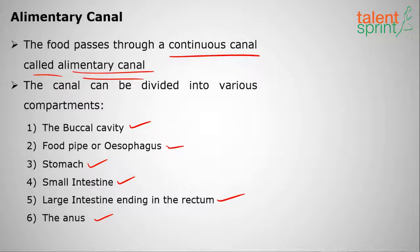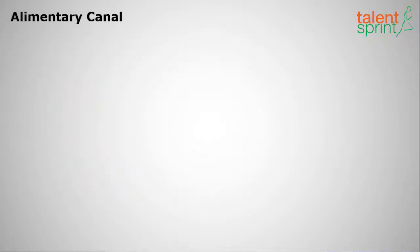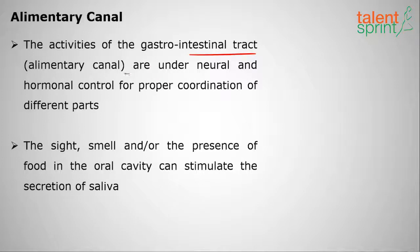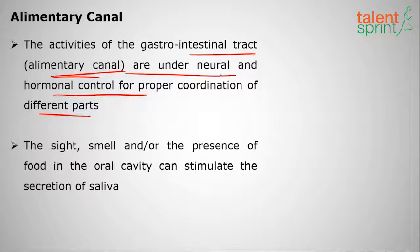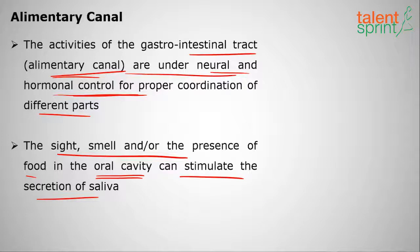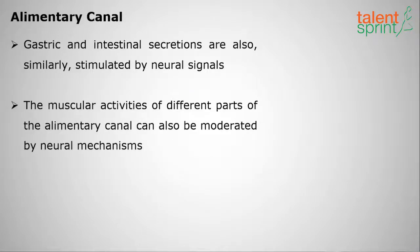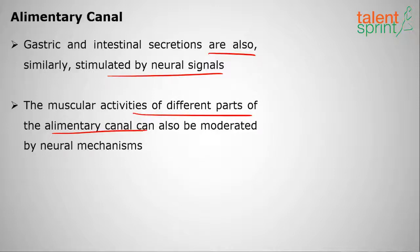The activities of the gastrointestinal tract are under neural and hormonal control for proper coordination of the different parts. The sight, smell, or presence of food in the oral cavity can stimulate the secretion of saliva. Gastric and intestinal secretions are also stimulated by neural signals. The muscular activities of different parts of the alimentary canal can also be moderated by the neural mechanism, particularly by the brain.